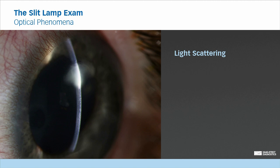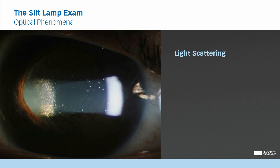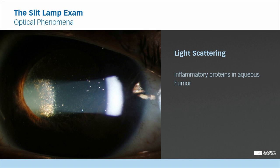During the slit lamp examination, this phenomena is frequently observed. For example, in this case of corneal infiltrate, the light is scattered and provides information about the dimension of the lesion. Or in this case of ocular inflammation, the light is scattered by the inflammatory proteins in the aqueous humor.